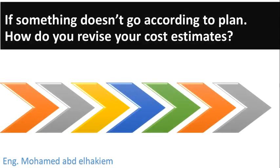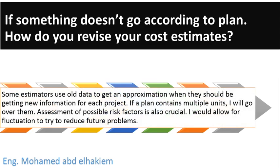If something doesn't go according to plan, how do you revise your cost estimates? Some estimators use old data to get an approximation when they should be getting new information for each project. If a plan contains multiple units, I will go over them. Assessment of possible risk factors is also crucial, and I would allow for fluctuation to try to reduce future problems.